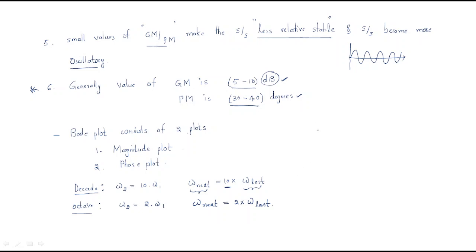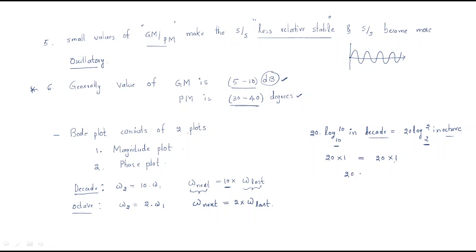By calculation, we get 20 log base 10 for decade and 20 log base 2 for octave. In decade we use base 10 and in octave we use base 2. The magnitudes in both cases come out to be the same — 20 equals 20. We use logarithms because we work in decibels. These are the different terms involved in the Bode plot.